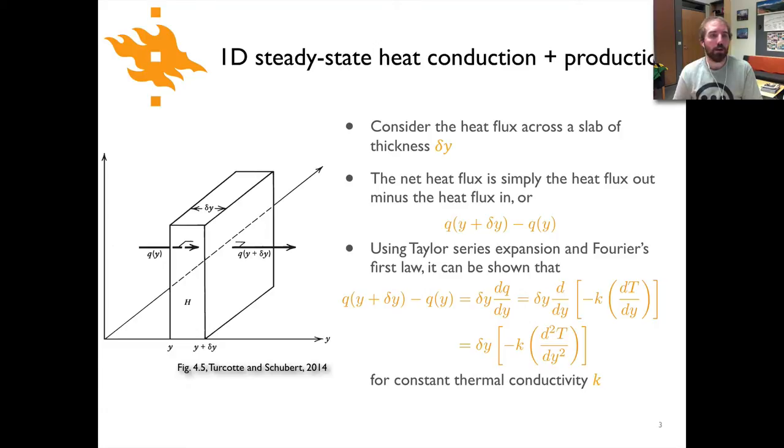We could start by looking at a simple snapshot of some infinitely thin slab of the earth. We're going to look at the heat flux across a slab of some thickness delta y. So here's our slab in the picture. It has h for its heat production at position y and then y plus delta y, which gives it a thickness of delta y. There's a heat flux q at y and a heat flux q at y plus delta y.